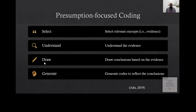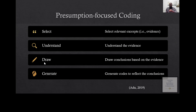The last type is presumption-focused coding. Here, you view the significant information you've identified from the data as evidence. Based on that evidence, you draw conclusions — and the conclusion becomes the code. So you select significant information, understand it, treat it as evidence, decide what conclusion to draw, and generate a code to represent that evidence. The codes are the conclusions, supported by the evidence identified from the data.